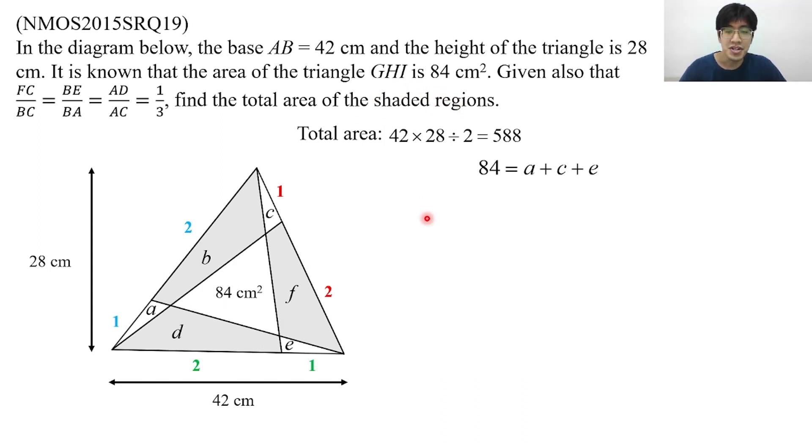In order to find the shaded regions, we can simply take the total area, 588, minus 84 (the central piece), and then the 84 from A, C, and E. So that we know the shaded region would be 420 centimeters squared. That's how you solve this problem.